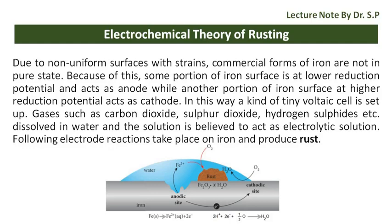Electrochemical theory of rusting. Due to non-uniform surfaces with strains, commercial forms of iron are not in pure state. Because of this, some portion of iron surface is at lower reduction potential and acts as anode, while another portion of iron surface at higher reduction potential acts as cathode. In this way, a kind of tiny voltaic cell is set up.